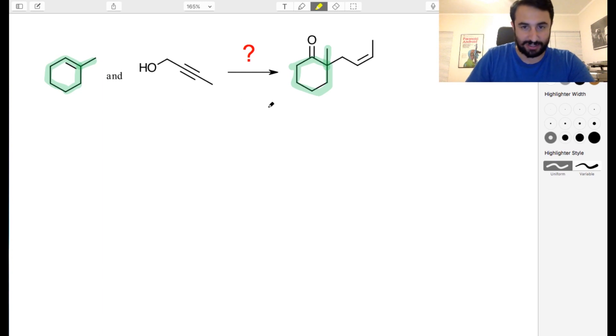Over here we got 1, 2, 3, 4. 1, 2, 3, 4. Again, seems very clear that these carbons come from those carbons.